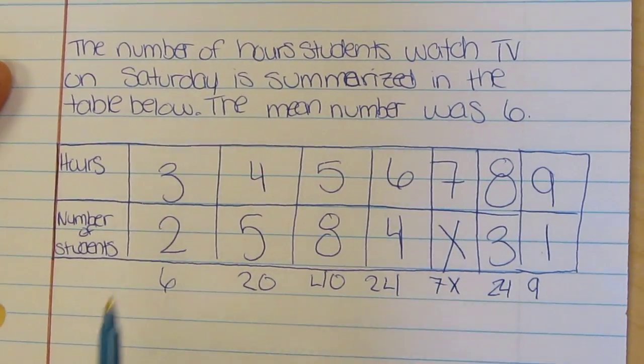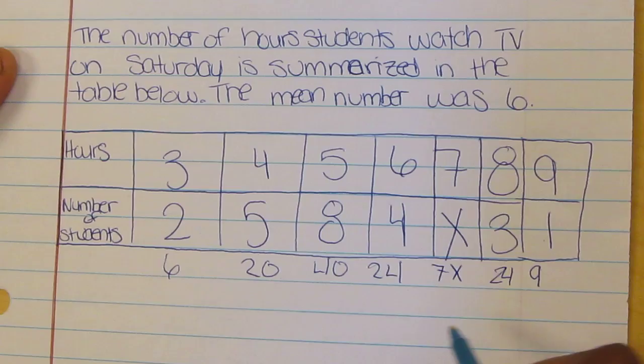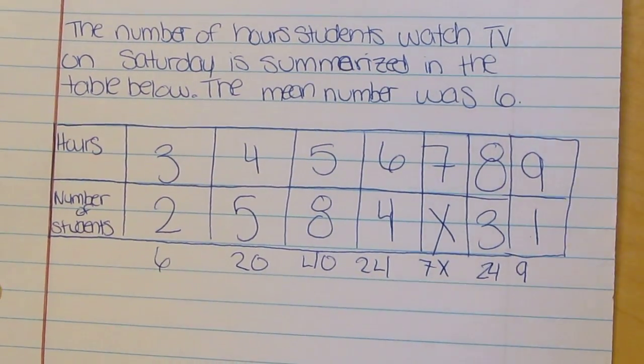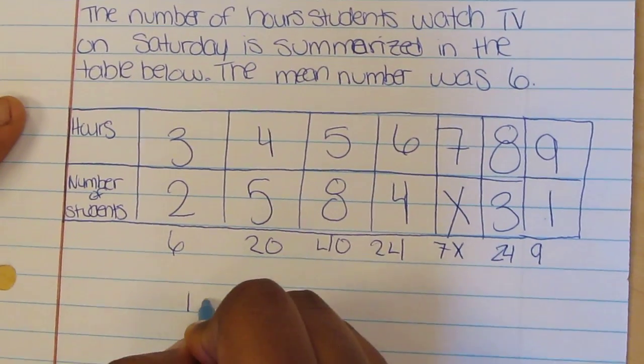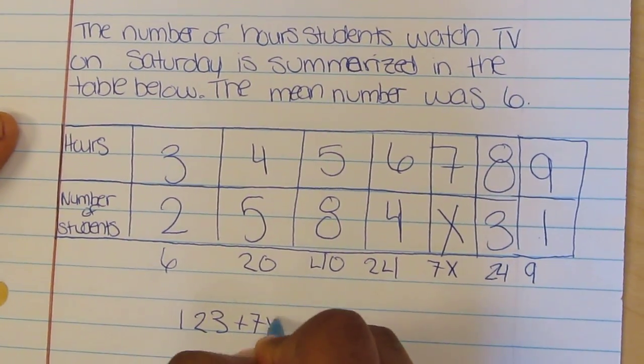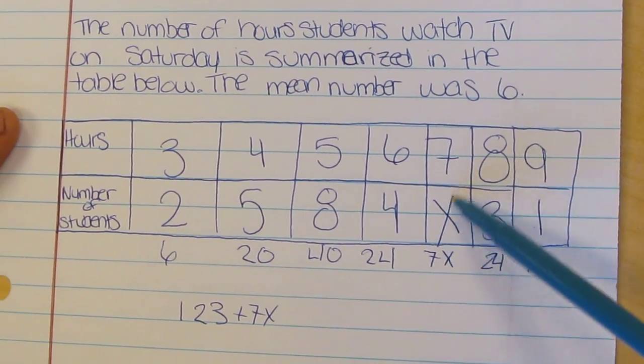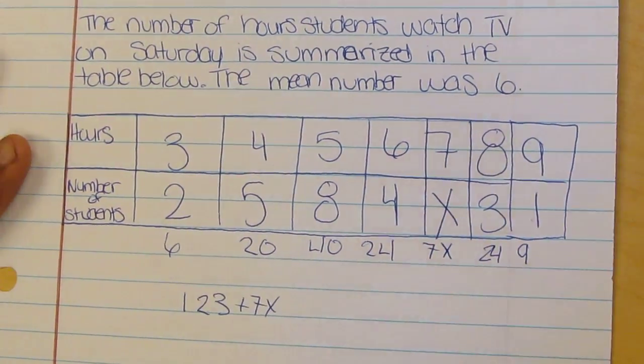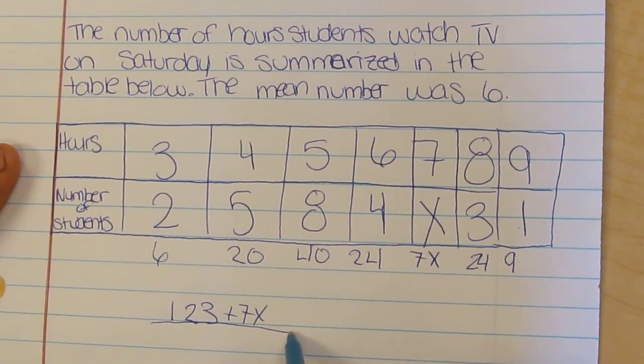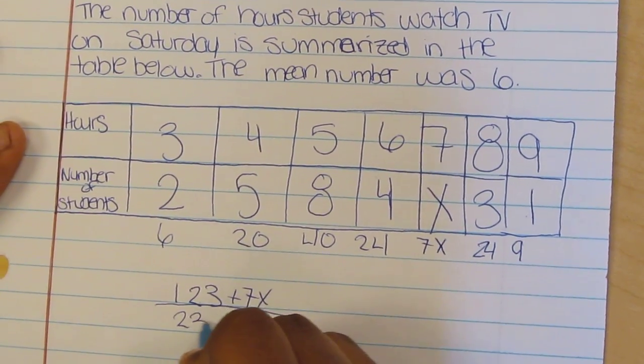It's 23. When you add these numbers you get 123 plus 7X. Since 7 has X, you just write it as 7X and not add it into the 123. You divide it over 23 plus X because that's how many numbers this is.